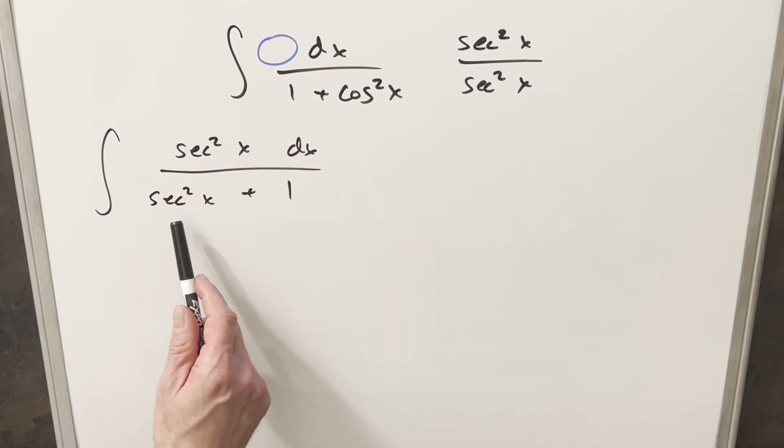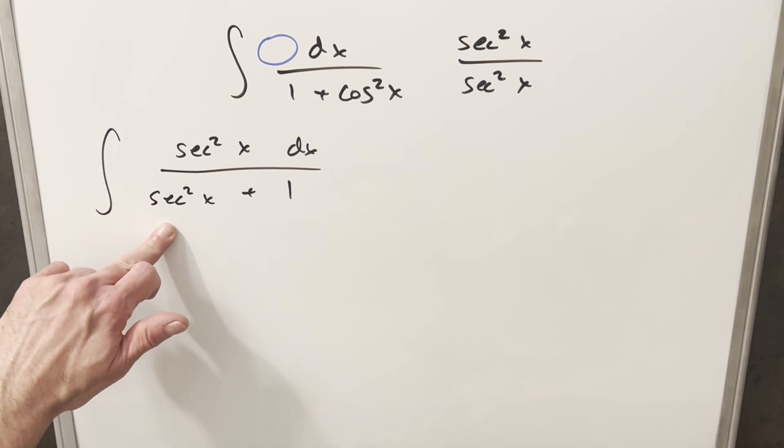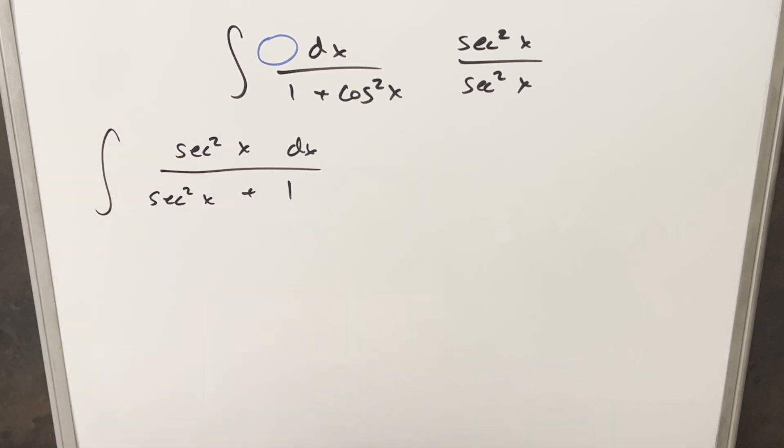But at this point, it's still not clear how we can do a u-substitution because if I do my u-substitution for secant, the derivative of that is secant times tangent. But it would be nice to have a tangent in the denominator because the derivative of tangent is secant squared.